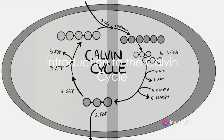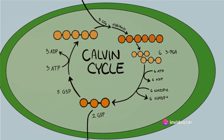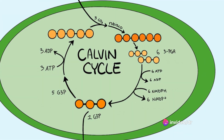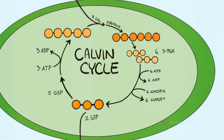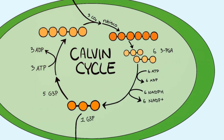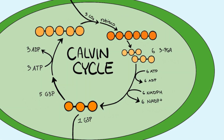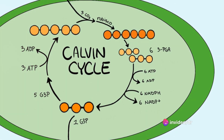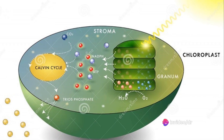The Calvin Cycle of photosynthesis is a series of chemical reactions that involve capture of carbon dioxide from the environment and conversion into sugars. The Calvin Cycle is also known by various names like light independent reactions, biosynthetic phase, dark reactions, or photosynthetic carbon reduction.